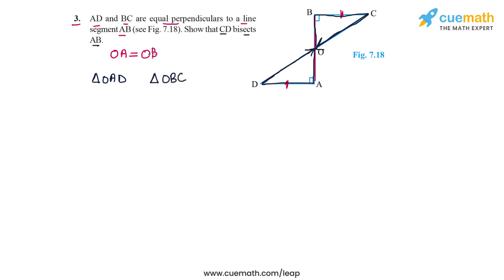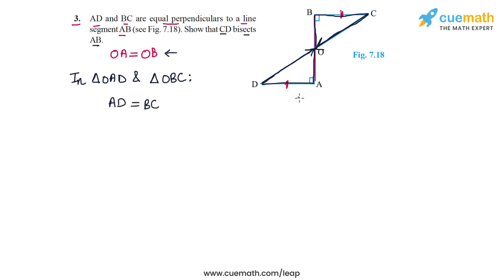Once we show that, we can claim using CPCT that OA is equal to OB. So let's compare triangle OAD and triangle OBC. In these two triangles, AD is equal to BC — this is given to us.